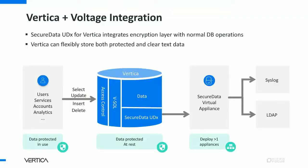Let's look at the UDX basics. When we add Voltage to Vertica, Vertica stays as-is at the center. If you get the Vertica distribution, you're getting the Secure Data UDX onboard — you just need to enable it and have the Secure Data virtual appliance. Your users, service accounts, and analytics are still typically doing SELECT, UPDATE, INSERT, DELETE operations within Vertica through Vertica's access control layer via SQL. We simply extend SQL for Vertica — when you add the UDX, you get additional syntax.